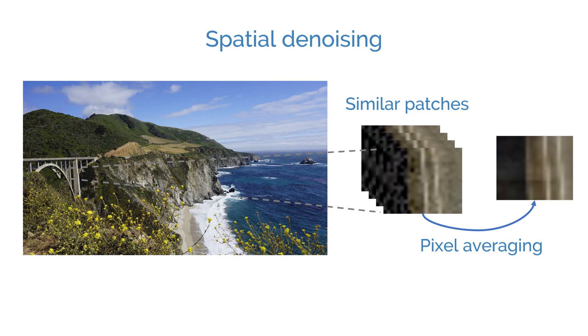Many modern camera systems, particularly smartphone cameras, use a combination of both spatial and temporal noise reduction.